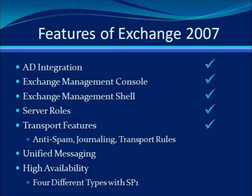There are plenty of new transport features, like anti-spam settings, journaling to make copies of your email to comply with government regulations, and the use of transport rules to control your mail in transit. A new unified messaging capability has been added to Exchange, and four different types of high availability solutions have been included — three released with the RTM version of Exchange, and one additional solution with SP1.